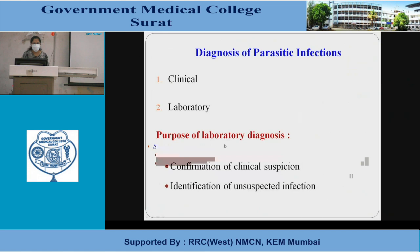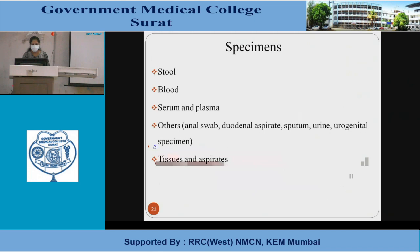Having taken an overview of the parasites, we now come to the laboratory diagnosis of parasitic infection, which includes two things: the clinical aspect and the laboratory aspect. The purpose of laboratory diagnosis is to confirm clinical suspicion and identify suspected infection. Specimens collected include stool, blood, serum and plasma, as well as anal swab, duodenal aspirate, sputum, urine, urogenital specimens, and tissue and aspirates.